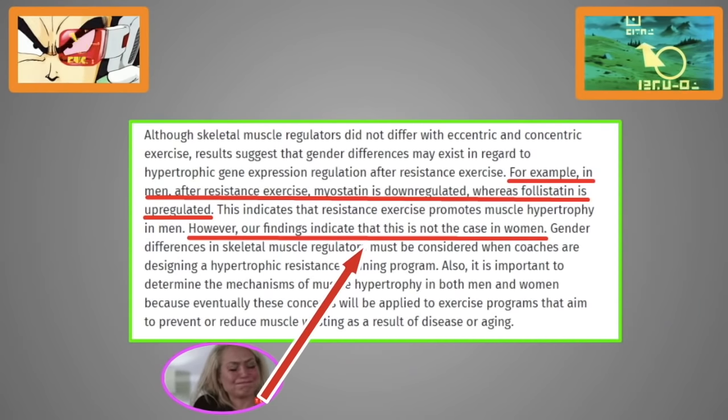As you can see here, one of the main reasons why women cannot get as big as men, even if you inject them with testosterone, is because their myostatin activity is way too high.